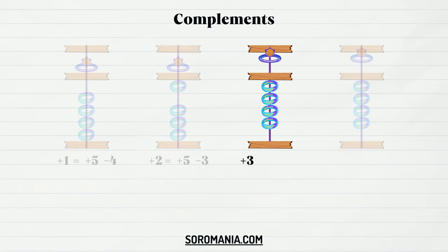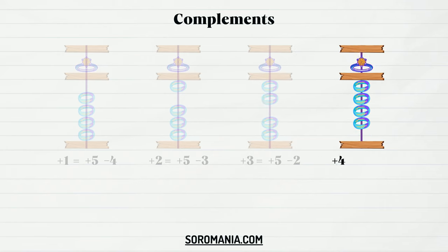If we need to add 3, we have to activate the Diamond Ring, then deactivate 2 little rings. The exchange formula is: plus 3 equals plus 5 minus 2. If we need to add 4, we have to activate the Diamond Ring, then deactivate 1 little ring. The exchange formula is: plus 4 equals plus 5 minus 1.